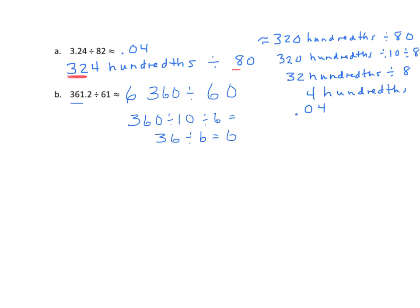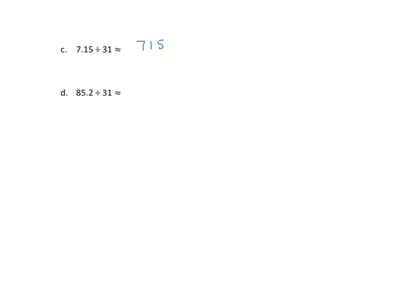Let's do a few more examples. As you can see, both of these problems were done in very different ways, and each one of these could be done in ways other than what I've demonstrated. We try to be flexible with our thinking. I'm going to do Problem C a couple of different ways. I'm going to start with changing it to unit form, just like we did with A. So 7 and 15 hundredths is 715 hundredths. I'm going to round my divisor 31 to 30.